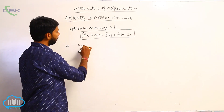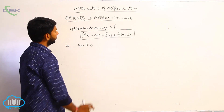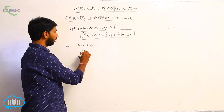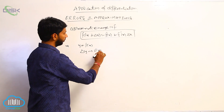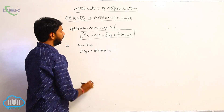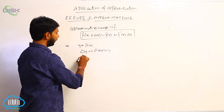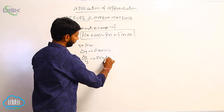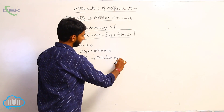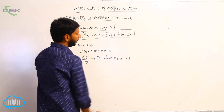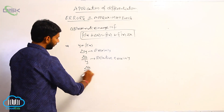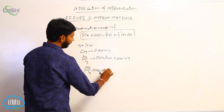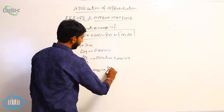Suppose y = f(x) be a function. Then delta y by y is called the relative error in y. And delta y by y into 100 is called the percentage error in y.